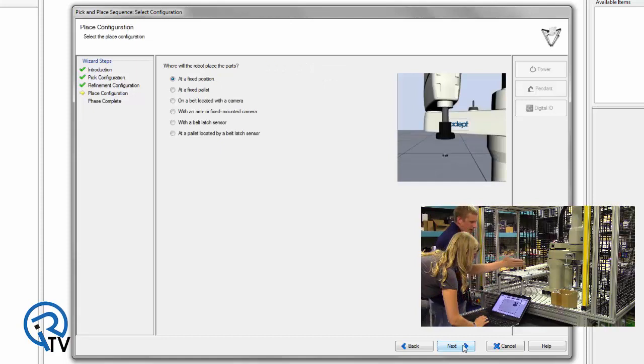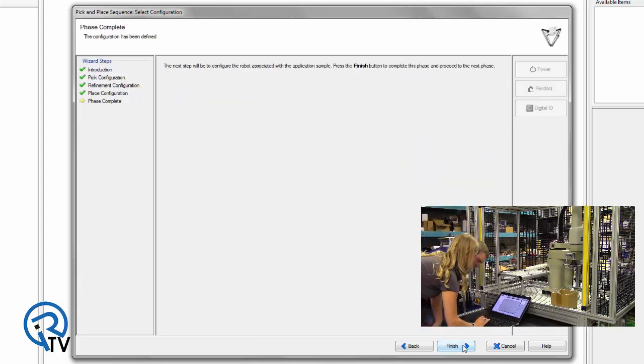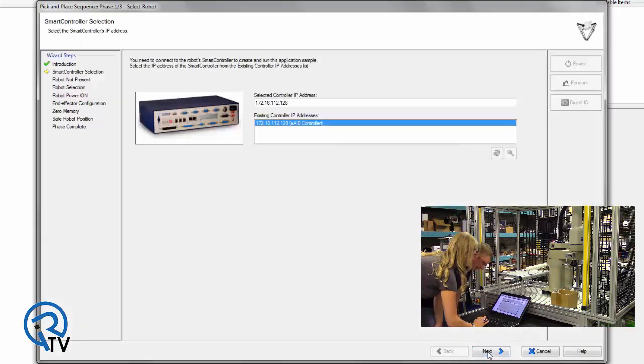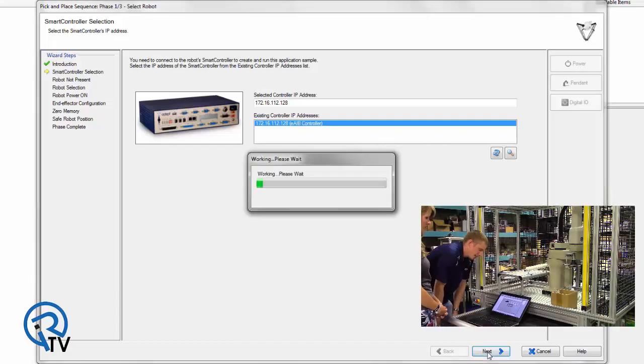We're not going to refine this because the placement is a box, but we can easily have a camera underneath here that's going to refine position and tell the robot exactly where that part is in the chuck. Place configuration is going to be at a fixed position. That box isn't going to move. Okay, phase complete, hit next. Now it's going to go out and look for the robot automatically attached to it. So hit next. Because it's found it with that IP address. Exactly. Once it's connected it'll move you on to the next step.